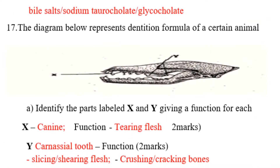Question number 17: the diagram below represents the dentition formula of a certain animal. You can see a skull with parts X and Y labeled. Part A — identify the parts labeled X and Y and give a function for each. X is the canine tooth; its function is tearing flesh.